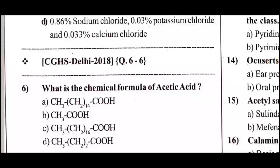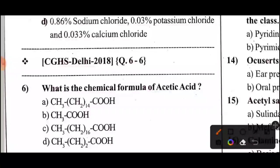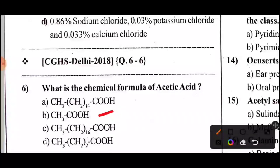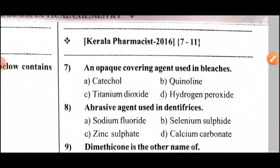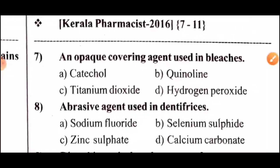Question 6: What is the chemical formula of acetic acid? Option B — CH₃COOH.